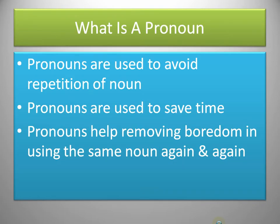Pronouns are used to avoid repetition of a noun. A noun is a naming word used to name a person or a thing. For example, if you are talking to John, it would feel awkward to keep saying: 'John, it's glad to meet you. John, your toys are very good. John, your dress is very pretty. John, your house is very clean. John, your room is very big.' You are using the word 'John' now and again, which seems awkward. So to avoid this repetition, we can use pronouns — instead of John, we can use 'you' or 'your'.